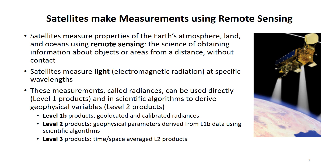Level 3 products are Level 2 products that have been averaged over time and/or space. For example, the Level 2 volcanic ash detection and height product might be generated daily. A Level 3 volcanic ash product would be a monthly average of the Level 2 products.